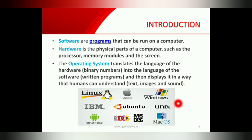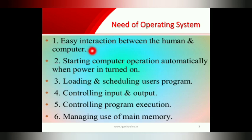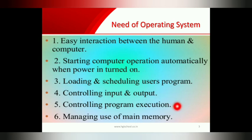Here you can see some examples of operating systems: Linux, Windows, Ubuntu, Android for mobile, etc. Now, what is the need of an operating system? Because of the operating system, there is easy interaction between humans and the computer. We are able to easily access the computer. It starts computer operations automatically when power is turned on, loads and schedules programs, controls all input and output, controls program execution, and manages main memory.